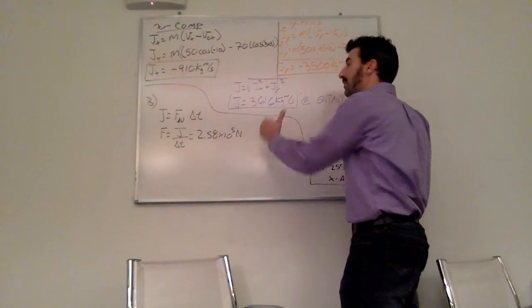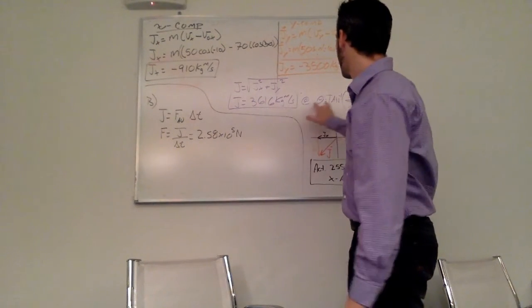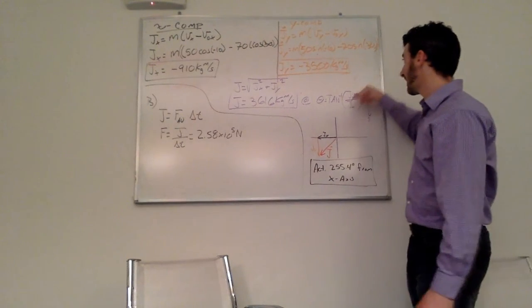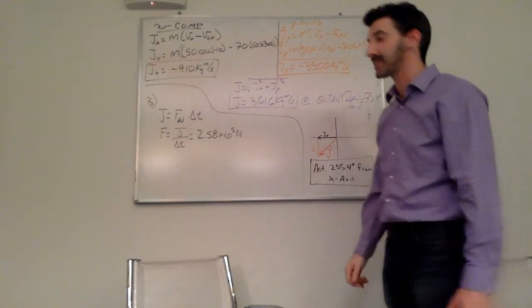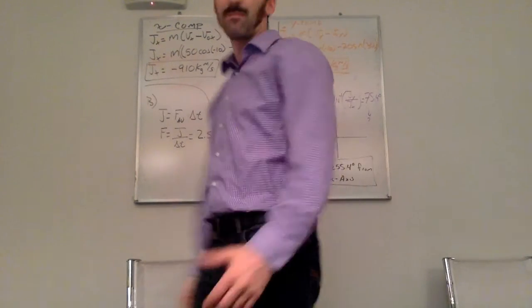I'm not done yet because momentum is a vector. So I figure out my angle by taking the inverse tan of my y component divided by my x component and I get 75.4 degrees.